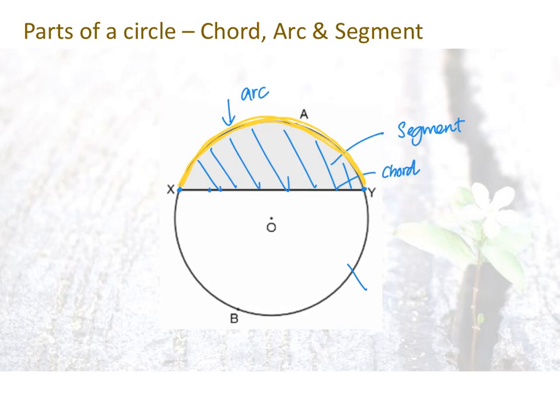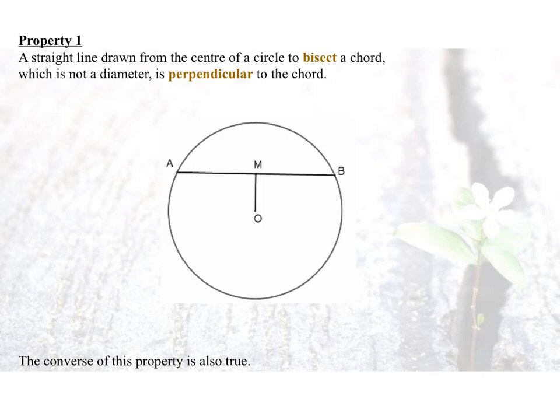Now let's take a look at some of the properties of circle. Symmetrical properties of circle. Property number one: a straight line drawn from the center of a circle to bisect a chord.